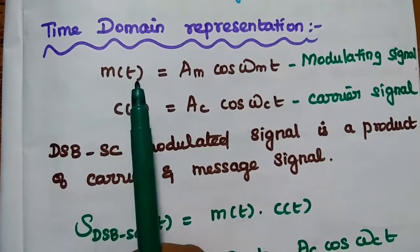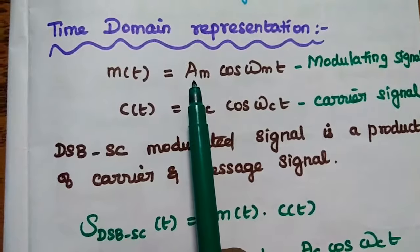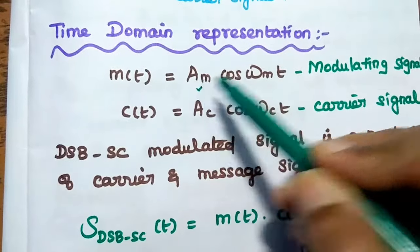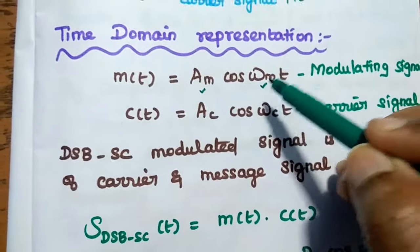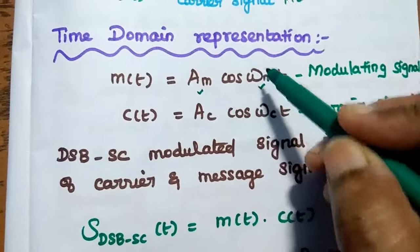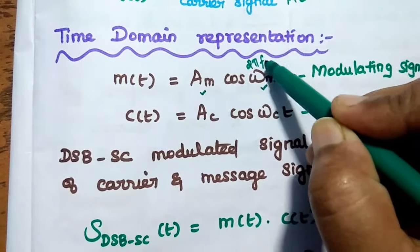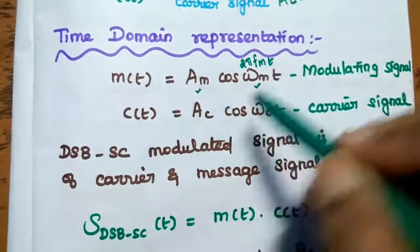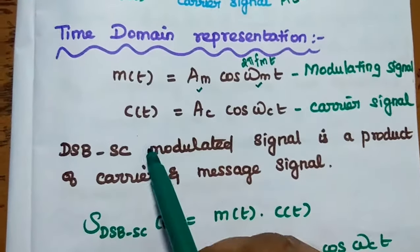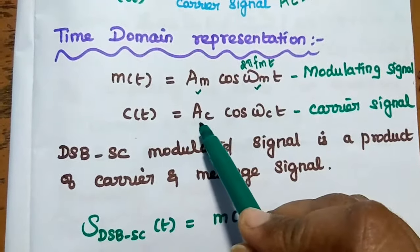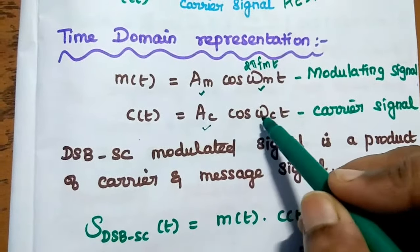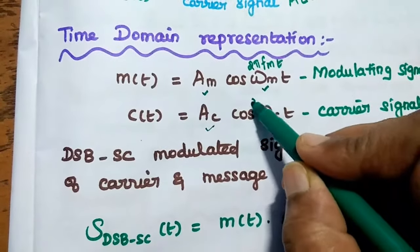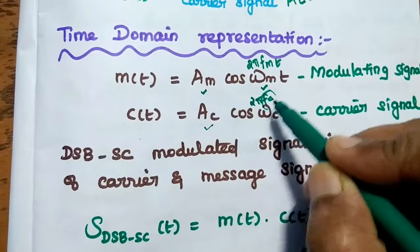M(t), the message signal or modulating signal, is equal to AM·cos(ωM·t), where AM is the amplitude of the modulating signal and ωM is the angular frequency of the modulating signal. C(t) is equal to AC·cos(ωC·t), where AC is the carrier amplitude and ωC is the angular frequency of the carrier signal. This can also be written as 2π·FC, where FC is the carrier frequency.